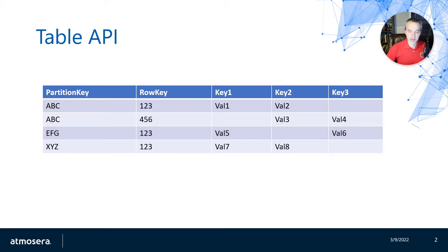Today we're looking at these at a high level, talking about the pros, cons, and use cases surrounding each one. To review how table APIs work: you have a key that defines each row in the table — specifically a partition key and a row key. Each row in a table API has a set of keys associated with it, and each row can have a separate set of keys.